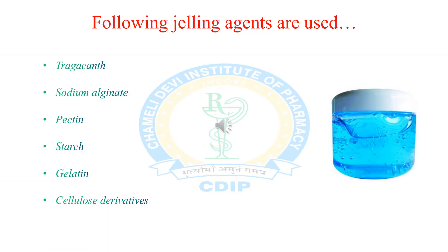In the preparation of jelly, some gelling agents are used such as natural gums — tragacanth, pectin, sodium alginate, starch, and gelatin — and some semi-synthetic or synthetic derivatives are also used such as methyl cellulose and sodium carboxymethyl cellulose.